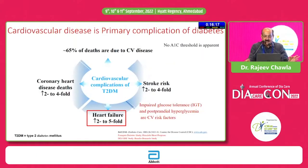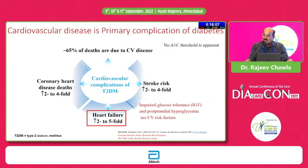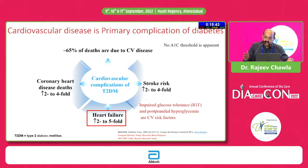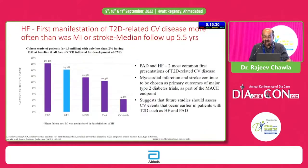Cardiovascular disease is the primary complication of diabetes — most patients die of CVD or coronary artery disease. About 65% of deaths are because of CVD. Stroke risk is almost two to four times higher; heart failure goes up by two to five times; so does coronary artery disease. There is no HbA1c threshold at which cardiovascular complications may start. There is huge evidence that CVD starts much earlier — almost 5 to 10 years before the onset of type 2 diabetes — so even at the stage of IGT or pre-diabetes, cardiovascular risk is much higher.